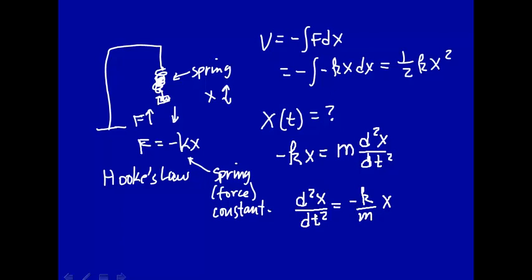So we can immediately write down the solution to this: x of t is equal to a e to the minus i square root of k over m t, now t is the independent variable here, plus b e to the i square root of k over m t.